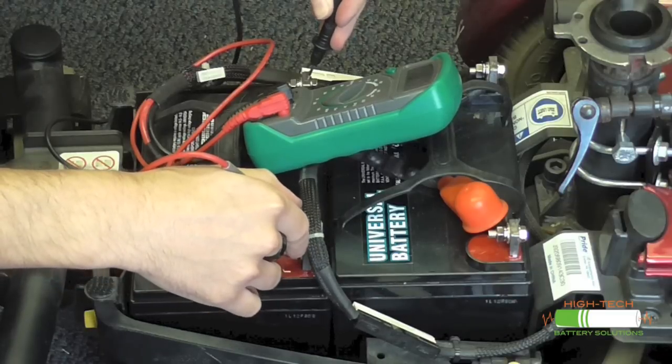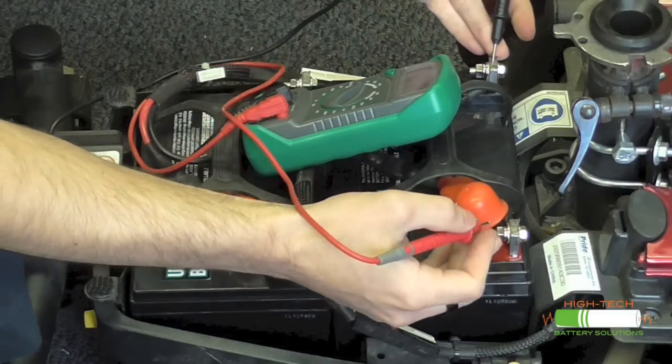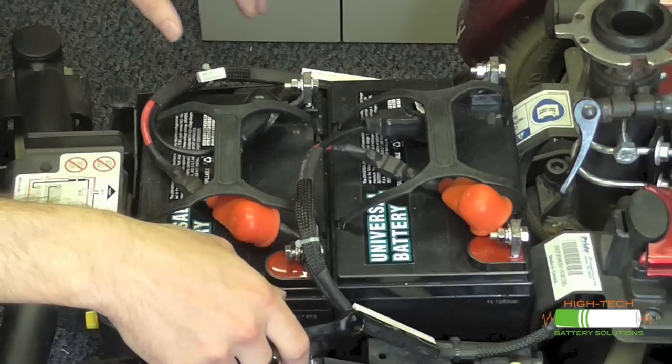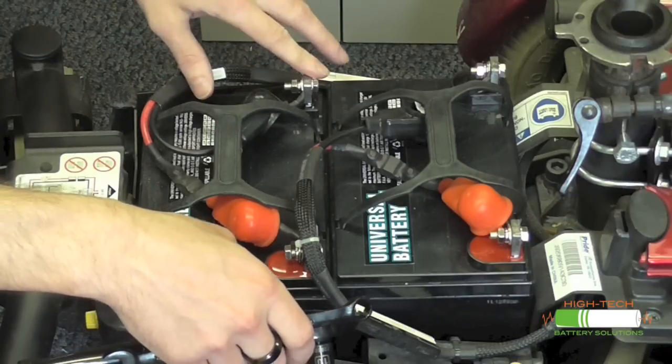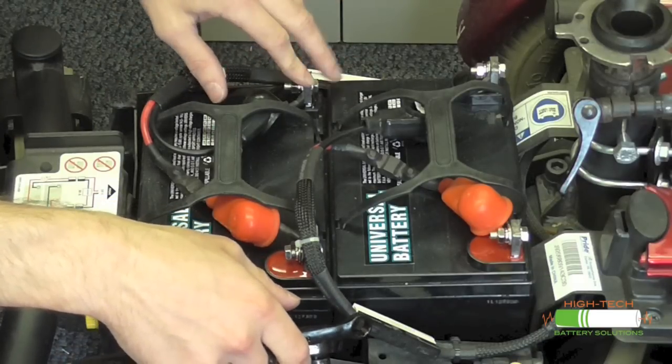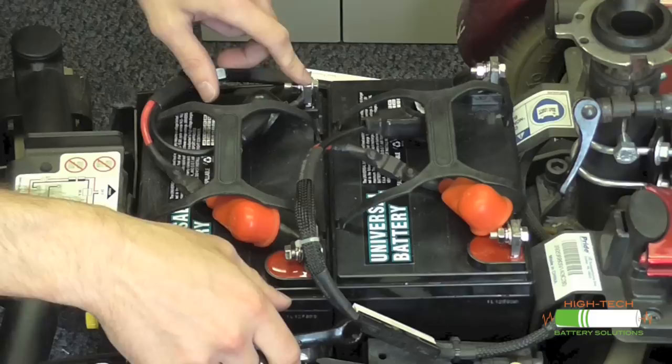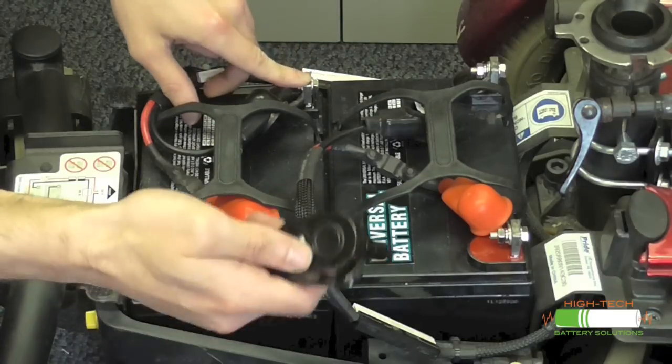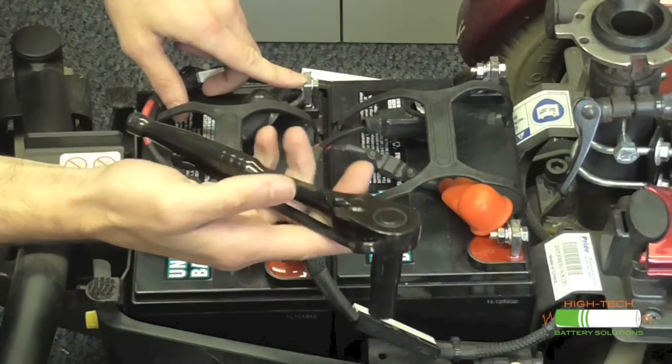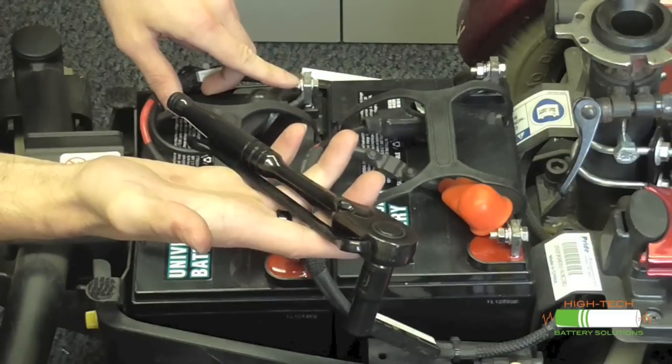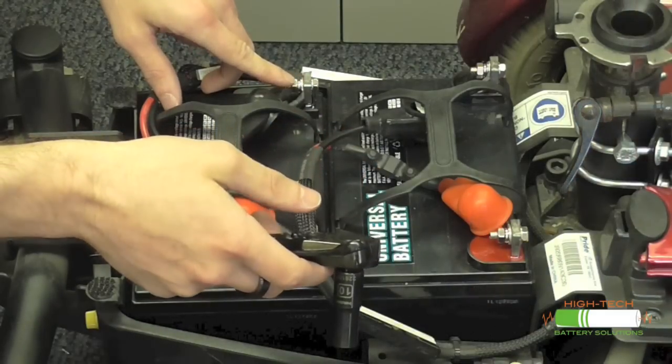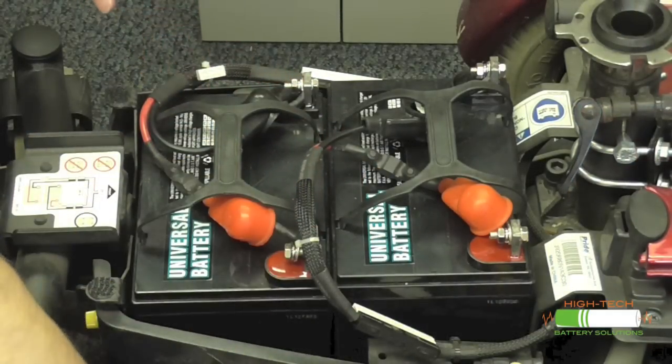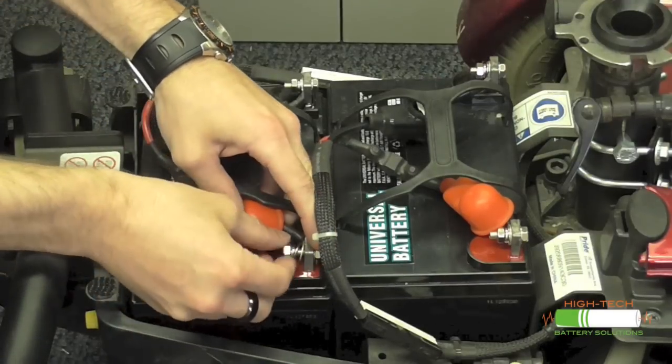This battery is coming in at .13 volts. So the first thing we're going to do here is we're going to loosen up and remove these wires. Everything on this particular Jazzy Select 6 model here is going to be 10 millimeter. We've already gone ahead with a ratchet and a wrench here and we've gone through and loosened up all the connections prior to this.